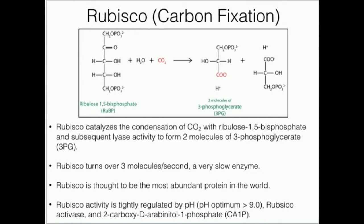This right here is ribulose 1,5-bisphosphate, or RUBP. The enzyme RUBISCO is really an acronym — it stands for ribulose 1,5-bisphosphate carboxylase oxygenase. It turns out that this enzyme can act as a carboxylase and an oxygenase. A carboxylase is an enzyme that adds carbon to some molecule, usually in the form of carbon dioxide.